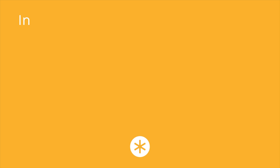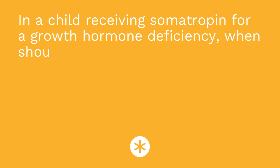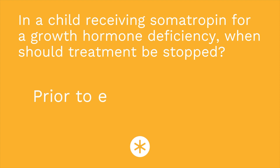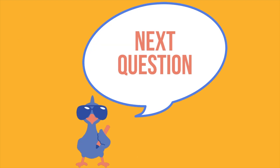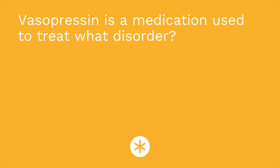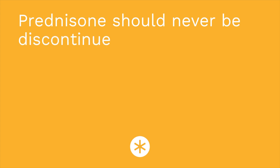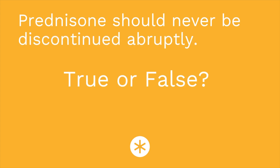It's time for a quiz — I have three questions for you. Question one: in a child receiving somatropin for a growth hormone deficiency, when should treatment be stopped? The answer is prior to epiphyseal closure. Question two: vasopressin is a medication used to treat what disorder? The answer is diabetes insipidus. Question three: prednisone should never be discontinued abruptly — true or false? The answer is true. We never want to stop those steroids abruptly; we want to taper slowly.